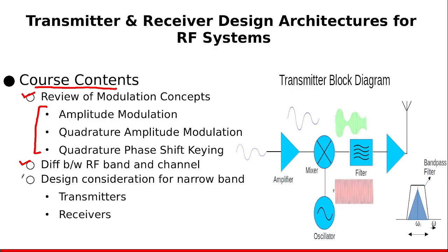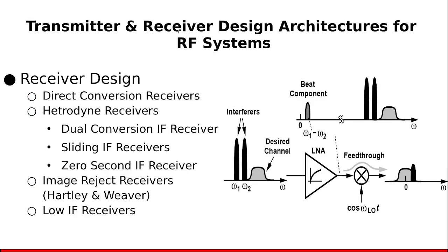After that, the design considerations for narrowband transmitters and receivers are discussed. Then we are going to discuss the different receiver design architectures — what are the pros and cons related to these receiver design architectures, and what are the system-level design issues related to these receiver design architectures.